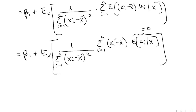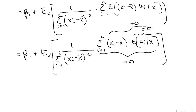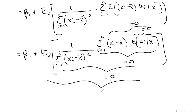So each term in the summation equals 0, meaning the entire sum equals 0. We're multiplying 1 over something times 0, so this is 0. Taking the outer expectation of 0 gives 0. Therefore, E[β̂₁] = β₁, which is what we wanted to show — the OLS estimator for β₁ is unbiased.